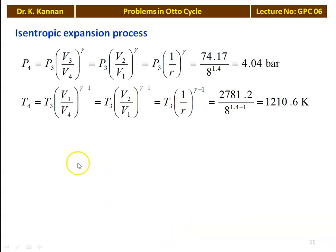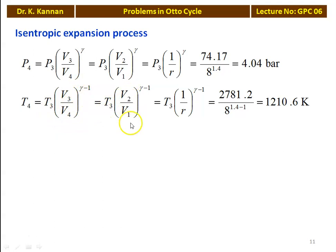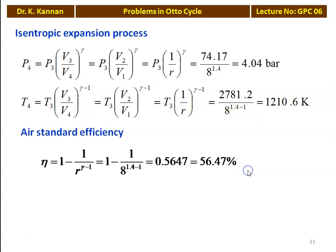For the adiabatic expansion process 3 to 4: P4 equals P3 × (V3/V4)^gamma equals P3 × (V2/V1)^gamma equals 74.17 / 8^1.4 equals 4.04 bar. T4 equals T3 × (1/R)^(gamma-1) equals 2781.2 / 8^0.4 equals 1210.6 Kelvin. Air standard efficiency eta equals 1 - 1/R^(gamma-1) equals 1 - 1/8^0.4 equals 0.5647, which is 56.47 percent.